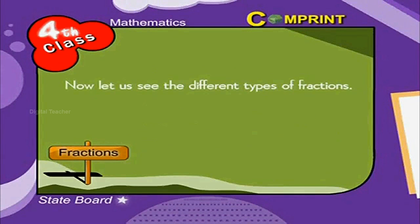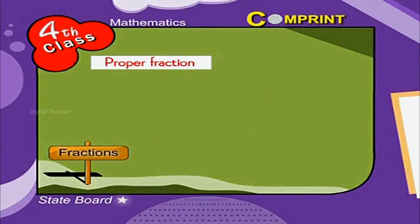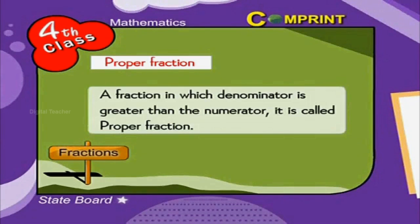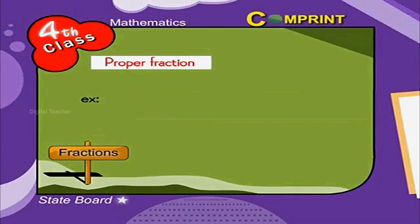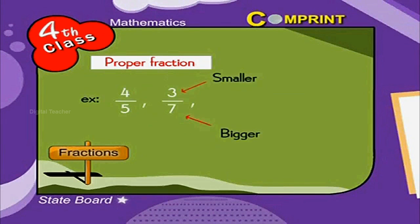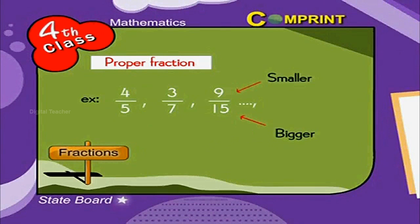Now let us see the different types of fractions. Proper fraction: A fraction in which the denominator is greater than the numerator is called a proper fraction. For example, 4 by 5, 3 by 7, 9 by 15, and so on.